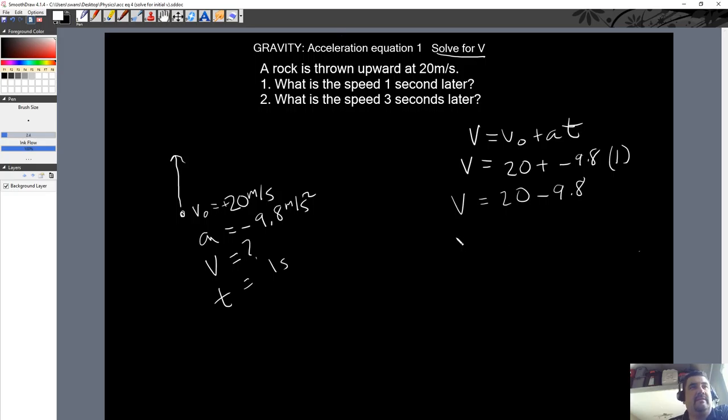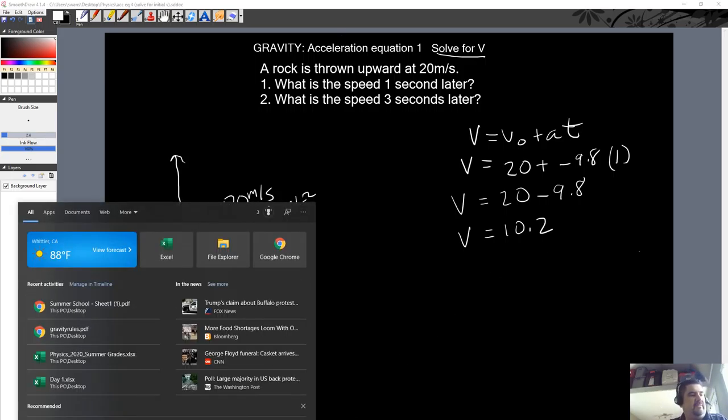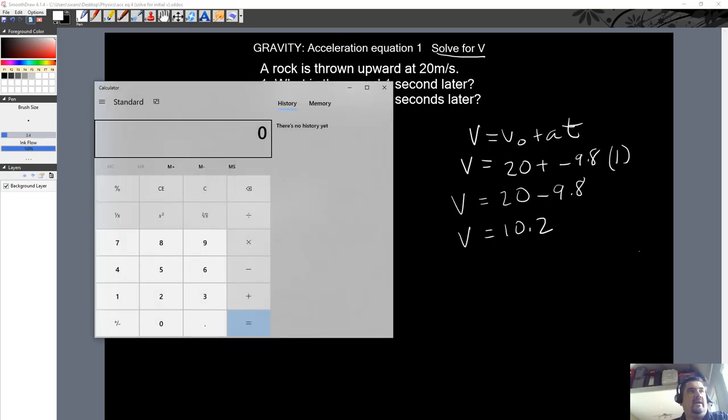Does that sound right? Yeah, I think that's right. 10.2. I'll show you the math behind that. Of course, I don't have my calculator open. Calculator. And we got 20 minus 9.8 is 10.2.